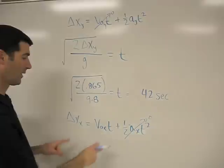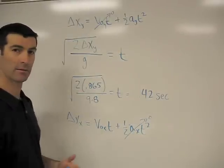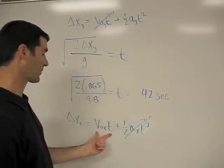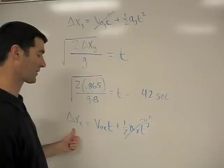That goes to zero. So we have just a straightforward velocity times time. This is a distance.